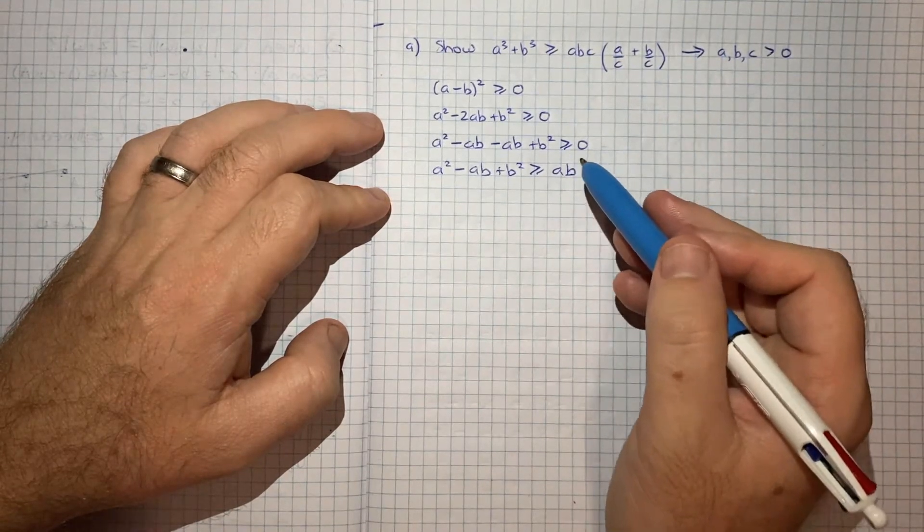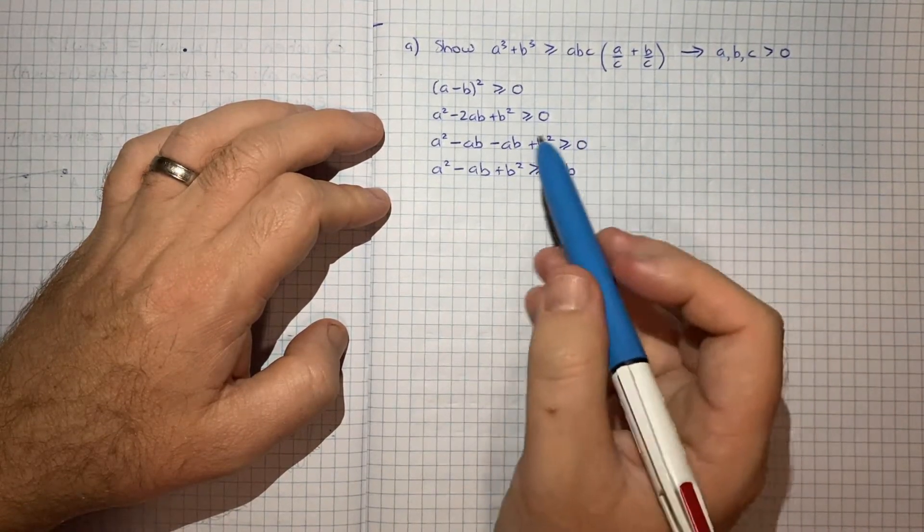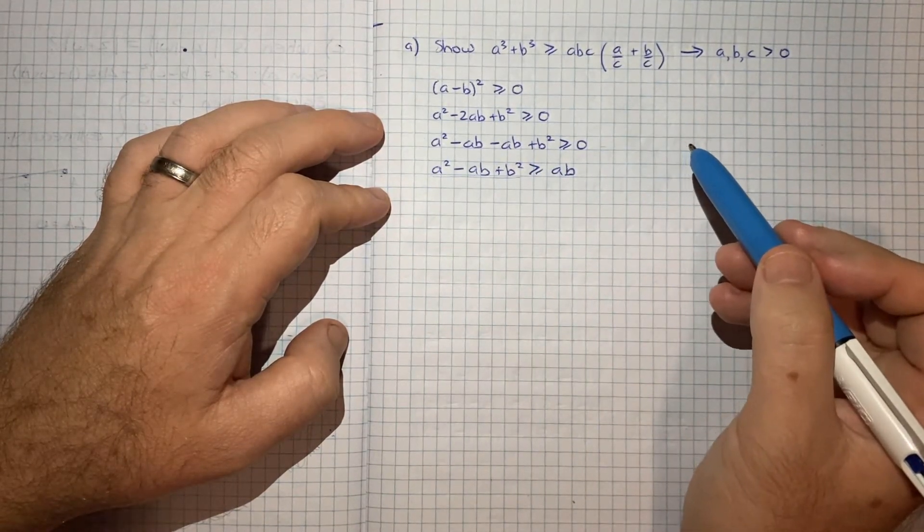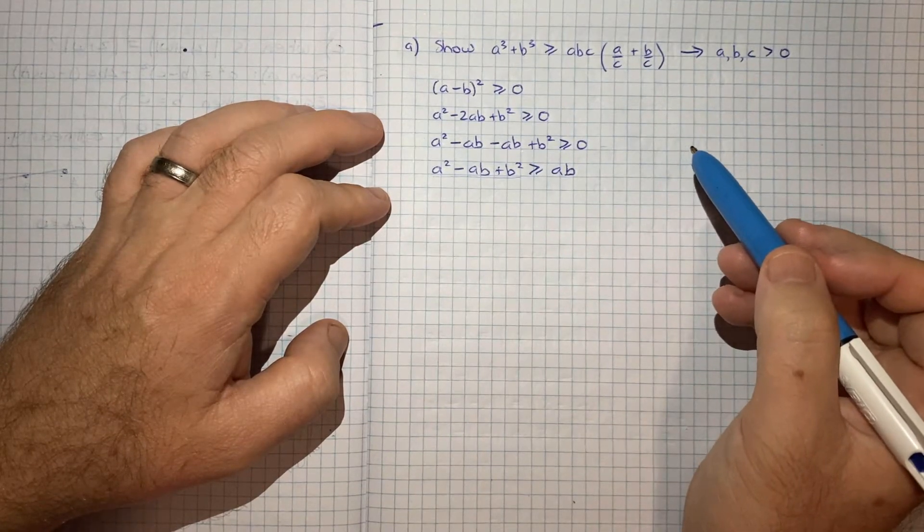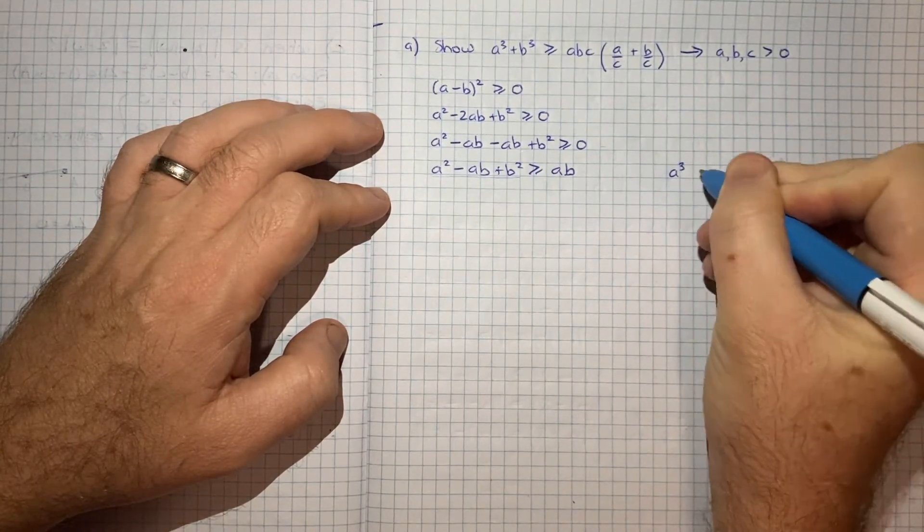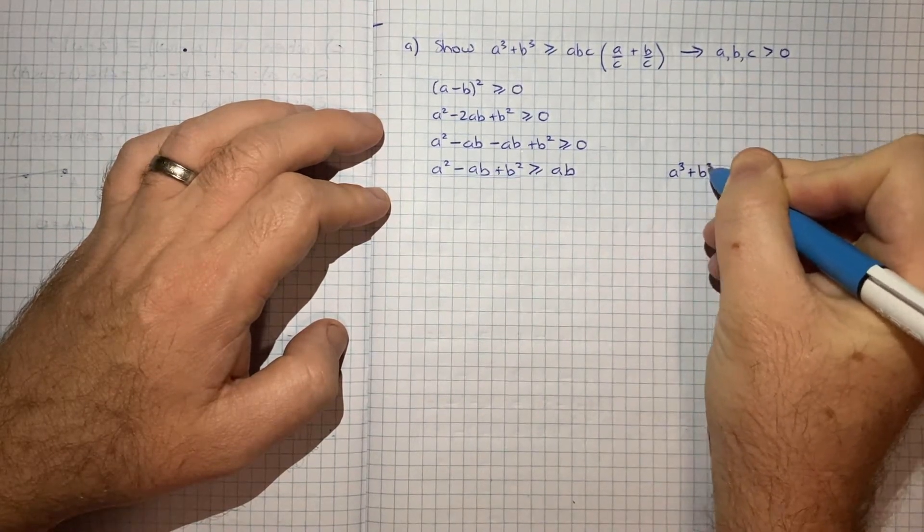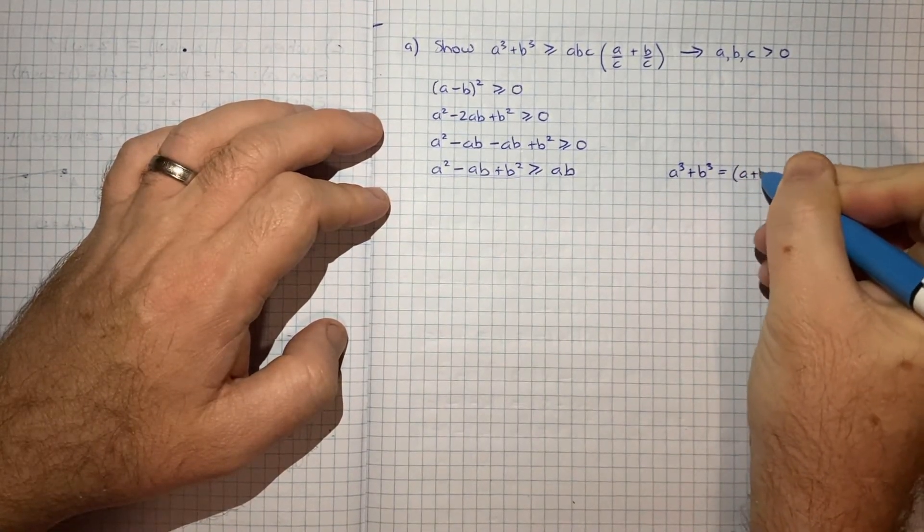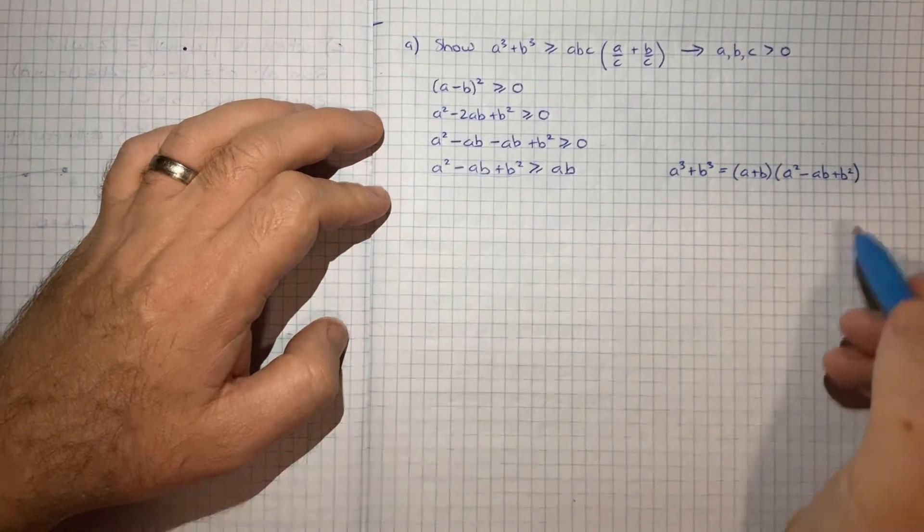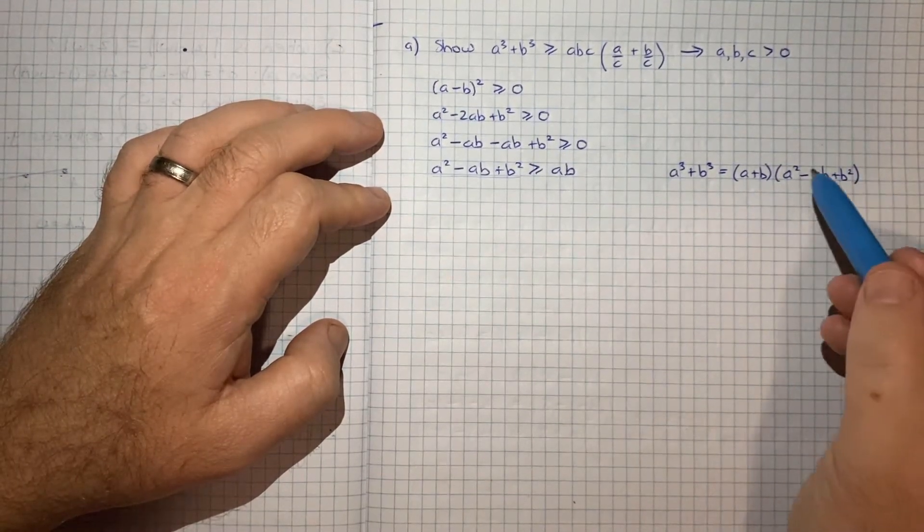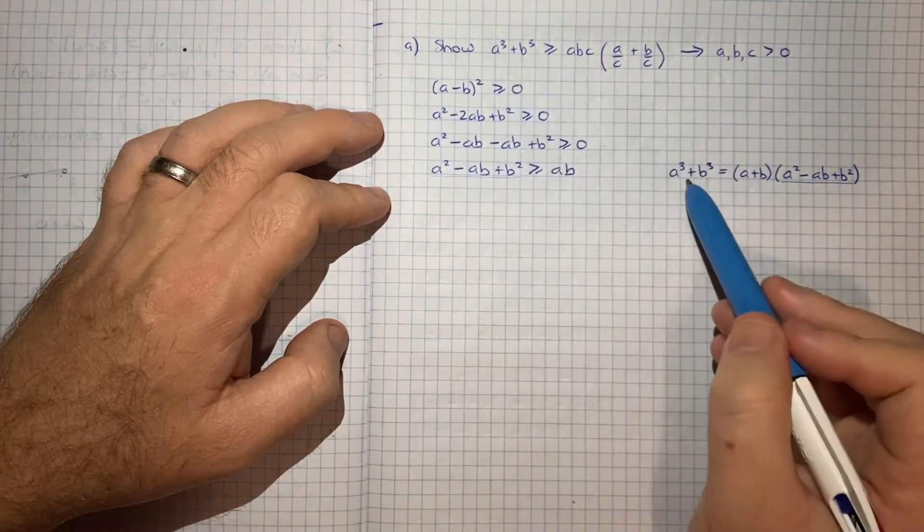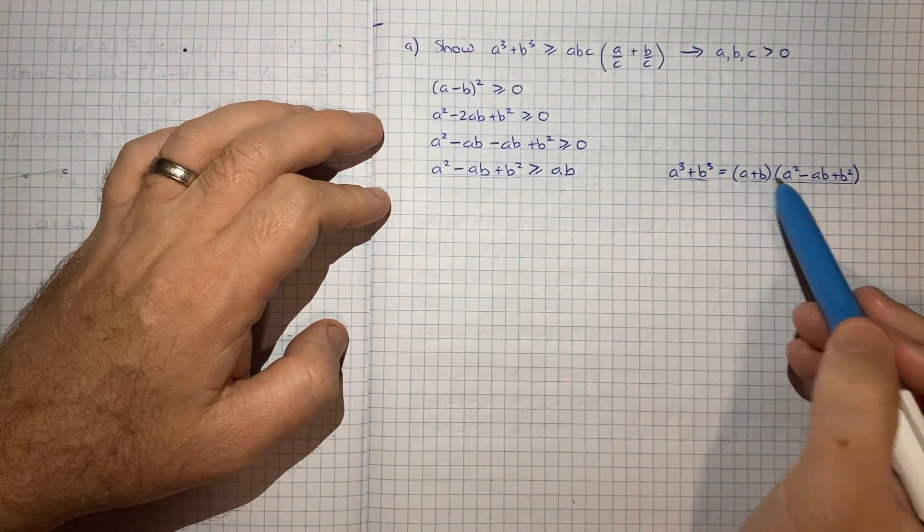And now what we want to kind of think about is you may recognise this as being part of the result for expanding the sum of two cubes. So maybe just over here I'll note a common result that you probably want to have in your toolkit is that a cubed plus b cubed is equal to a plus b, a squared minus ab plus b squared. So that's something that I think we can take advantage of because we've got this part here on the left-hand side. We want to get a cubed plus b cubed, that's where we want to end up, and the missing link here is a plus b.